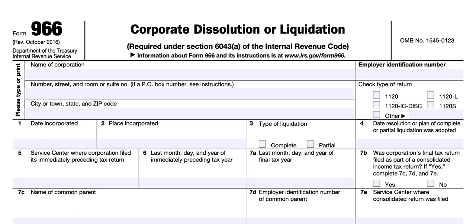On the right-hand side, you'll check the type of return that this corporation normally files. In block one, enter the date of incorporation. In block two, enter the place of incorporation. In block three, check whether this is a complete or a partial liquidation. In block four, enter the date of the resolution or plan of complete or partial liquidation that was adopted. In line five, enter the IRS Service Center where the corporation filed its immediately preceding tax return. If that return was filed electronically, simply enter e-file on line five. In line six, enter the last month, day, and year of the previous tax year.